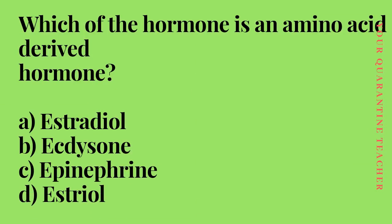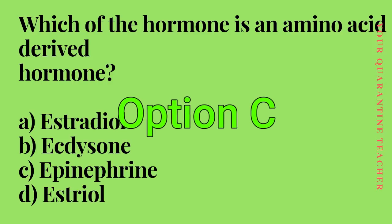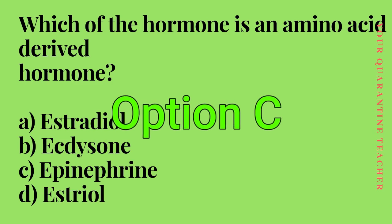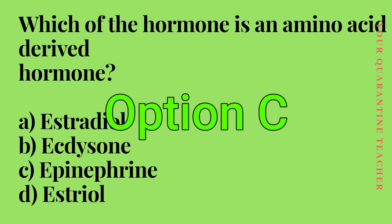Next question: which of the following is an amino acid derived hormone? Option A: estradiol, Option C: ecdysone, Option C: epinephrine, Option D: estriol. The answer from NCERT is Option C — epinephrine.